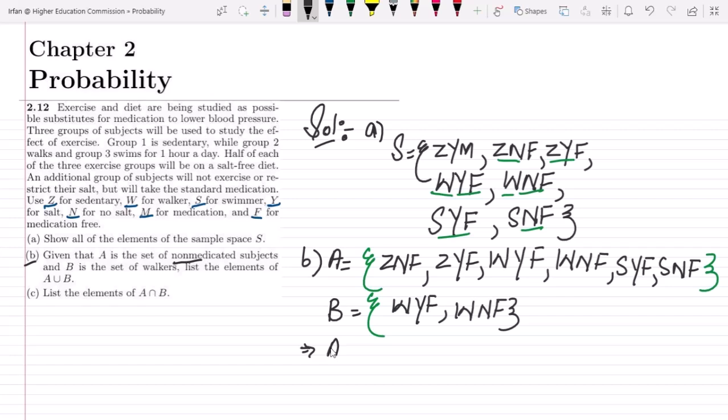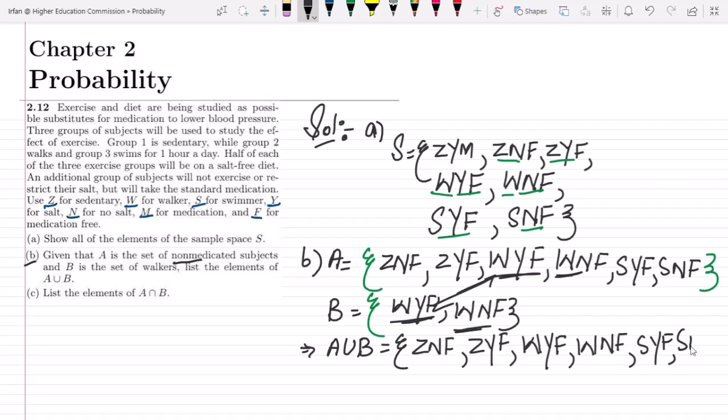So let me take A union B. It will be ZNF, the first one here, then ZYF. Then these two are basically present here, so I have to write them only once in the union: WYF, WNF. Then SYF here and SNF. This is for the A union B. You can see that A union B is also equal to A because all the elements of A are in A union B.